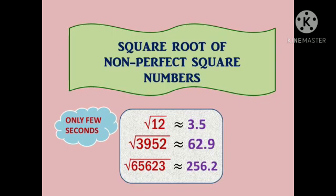Whenever an accurate value is not necessary for you, you can use this method to find the square root. The method we are going to see today is very easy — unlike the long division method, this is not a lengthy process. We can find the square root within a few seconds. If we solve 2 or 3 examples, you may come to know how easy this method is.